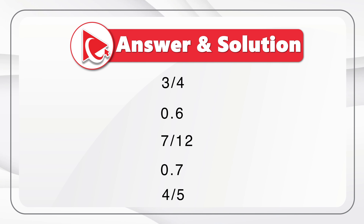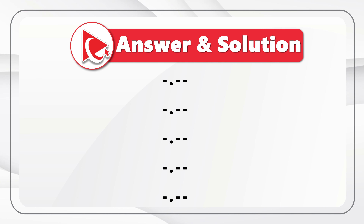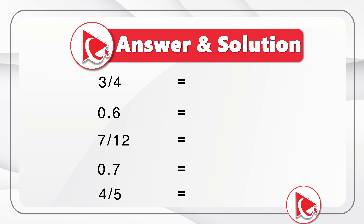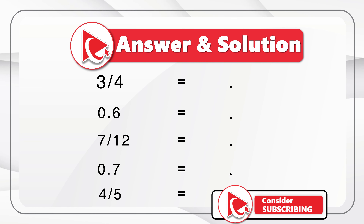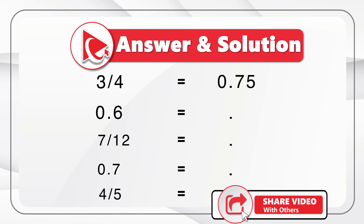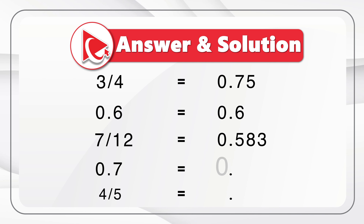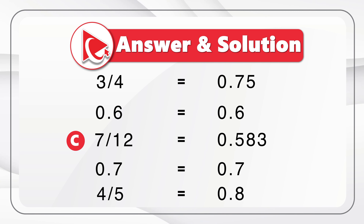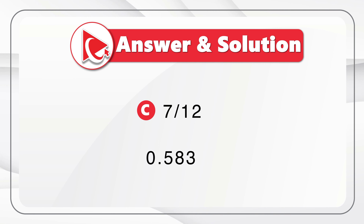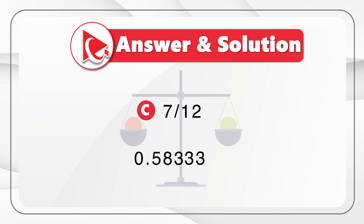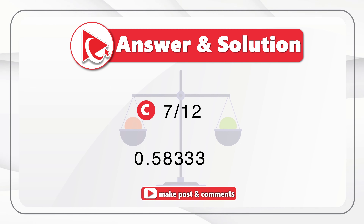3/4 in decimal is 0.75, 0.6 is 0.6, 7/12 is approximately 0.583, 0.7 has the same value, and 4/5 is 0.8. Now you can easily see that the smallest value is Choice C, 7/12, which is approximately 0.58333. If you did not get to the same solution, please make sure to post your answer and solution in comments.